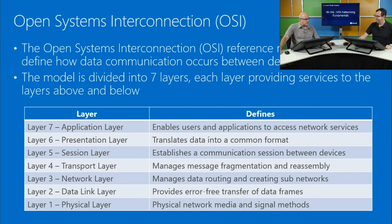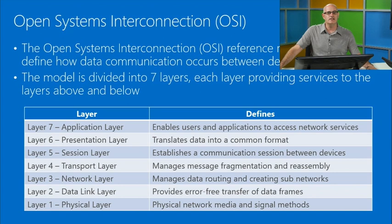Layer four, the transport layer, manages message fragmentation and reassembly. Layer three, the network layer, manages data routing and creating subnetworks — we talked a bit about subnetworks when discussing LANs. Layer two, the data link layer, provides error-free transfer of data frames. And layer one, the physical layer, handles physical network media and signal strengths.